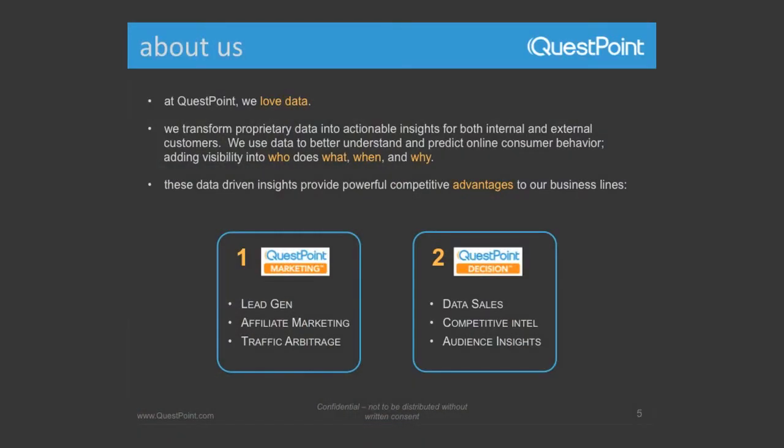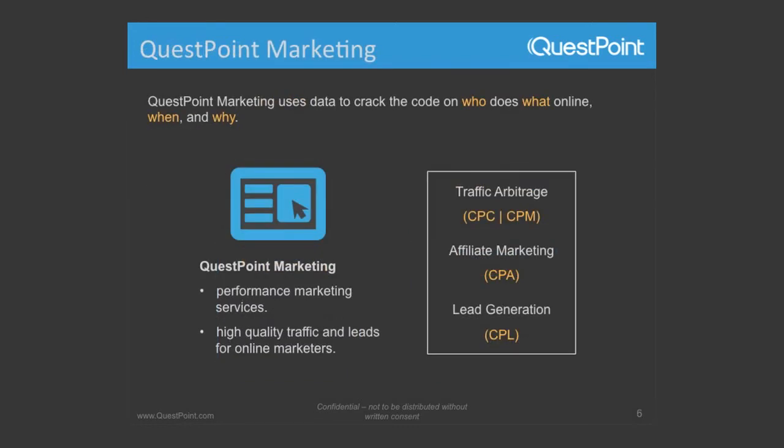So about us — QuestPoint. We're really excited about data. We started about five years ago with the goal of providing monetization for application developers and third-party products. That's our QuestPoint Marketing. And then recently we decided to start a secondary subsidiary called QuestPoint Decision, which helps gain insight using that data. QuestPoint Marketing has been around for five years. We have a user panel of over 75 million unique users a month, and we're in approximately 145 countries. The goal was to help application developers actually make money, become ROI positive on the apps they're developing.